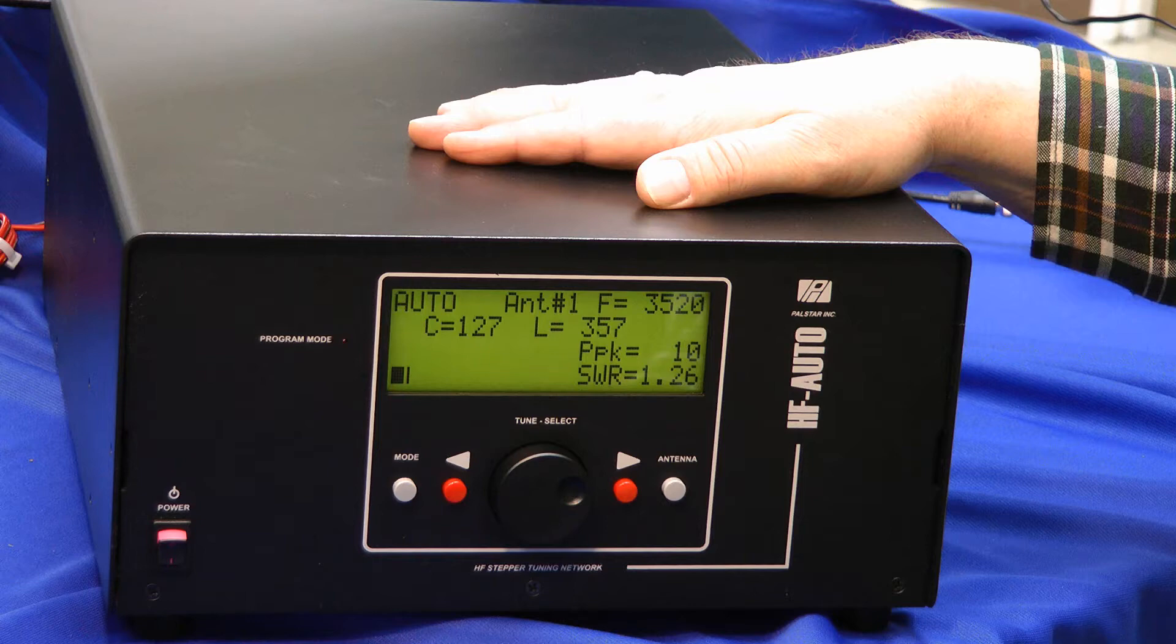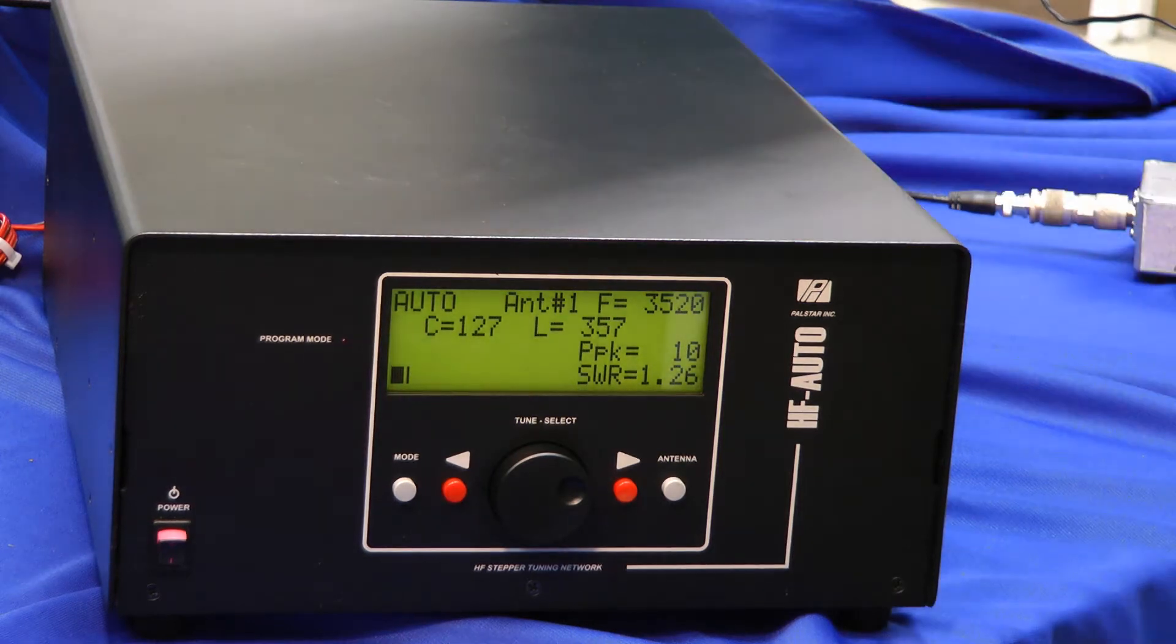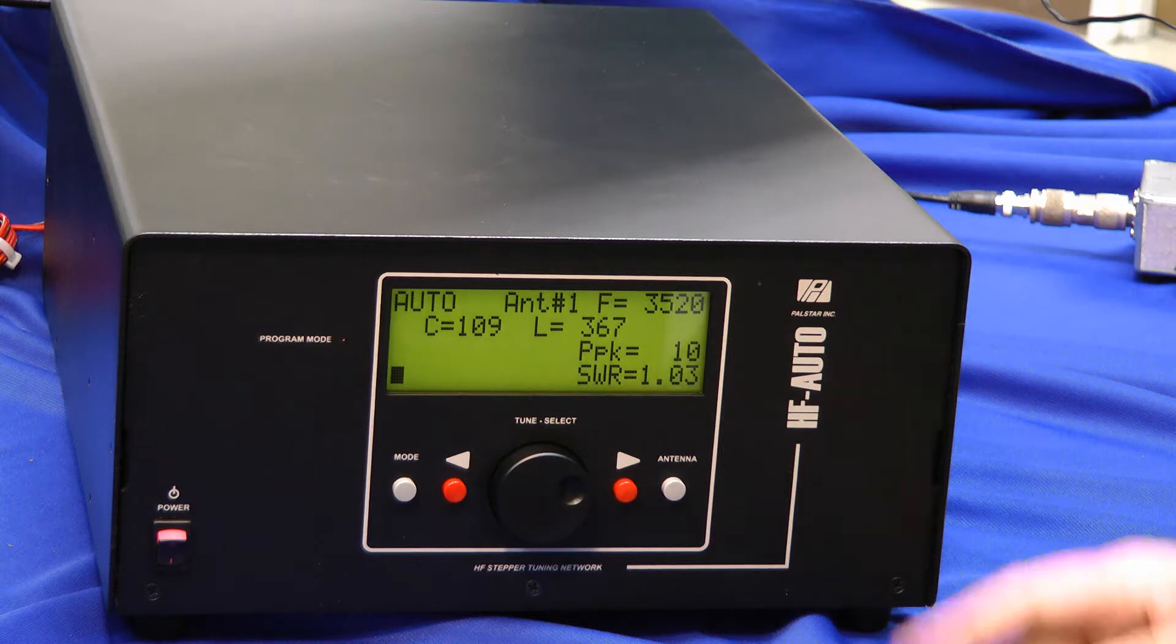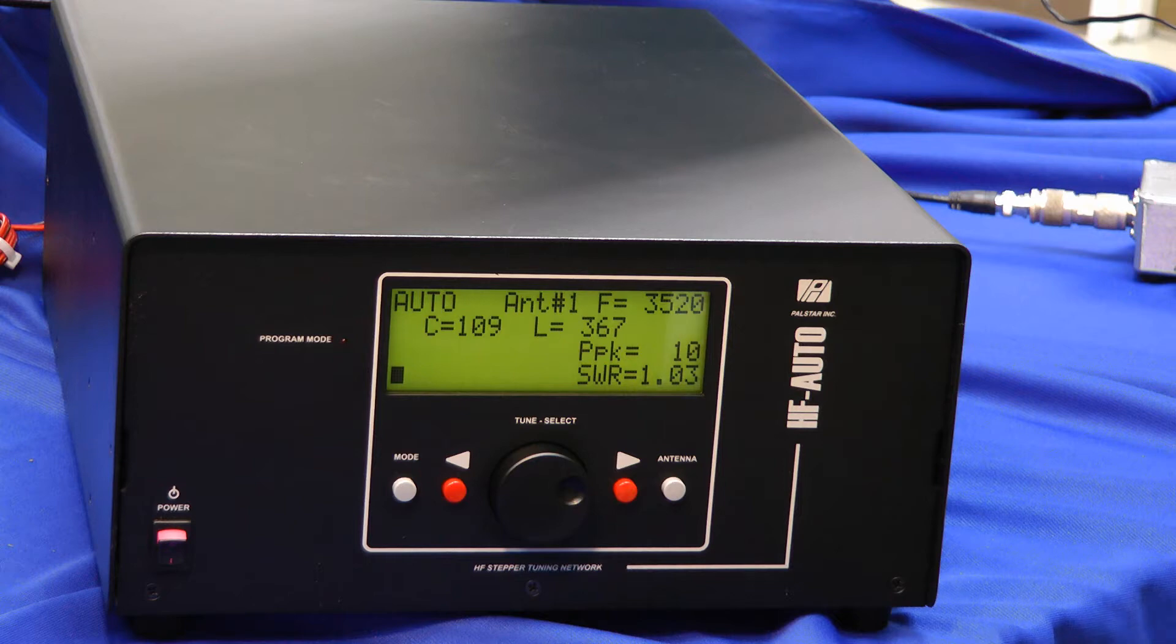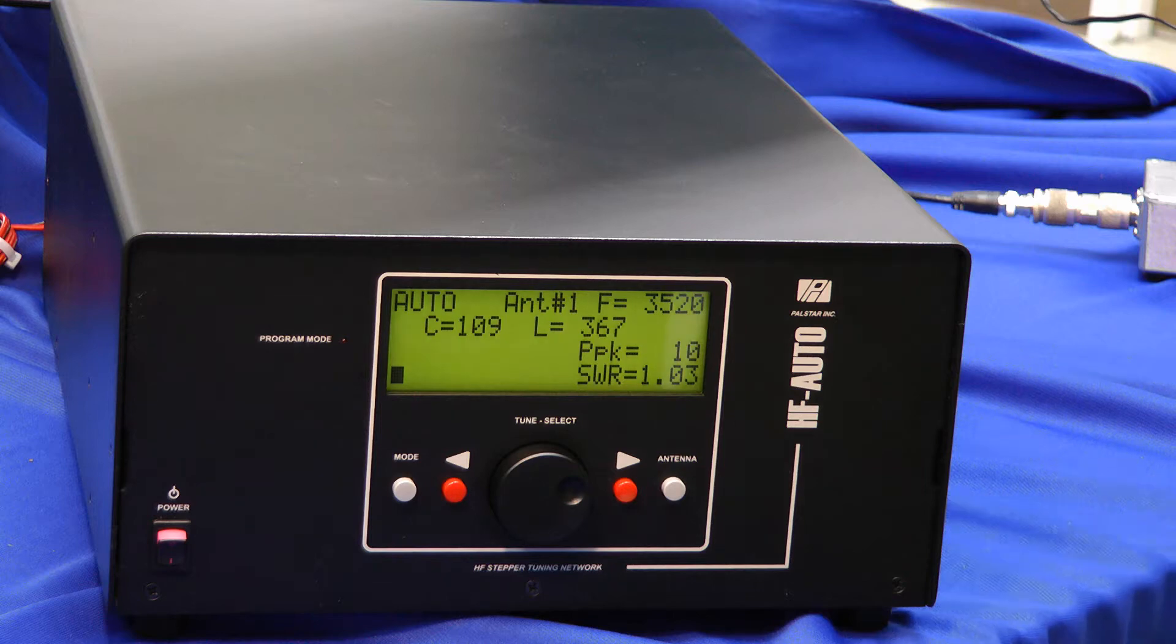Wow, let's see how this works. I'm going to apply power about 10 watts. Here it goes. It's automatically hunting for the best SWR. I have a 1.03 to 1 SWR into a 50 ohm load now. Let's switch the antenna load over to 200 ohms and watch it tune.